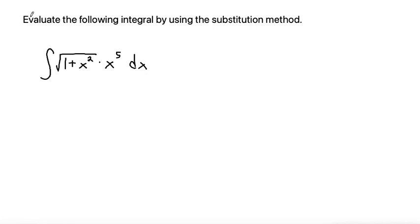Here we have a problem that says to evaluate the following integral by using the substitution method, and we have that the integral is the square root of 1 plus x squared times x to the fifth dx.